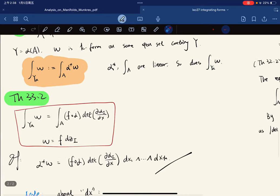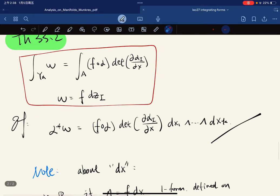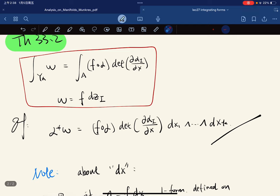And our proof is one line. We know that this, right? And this, then alpha star of this, which is this.